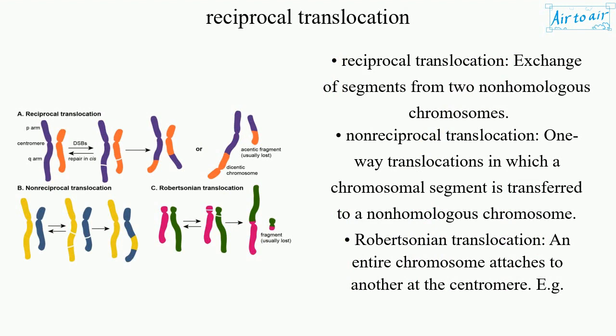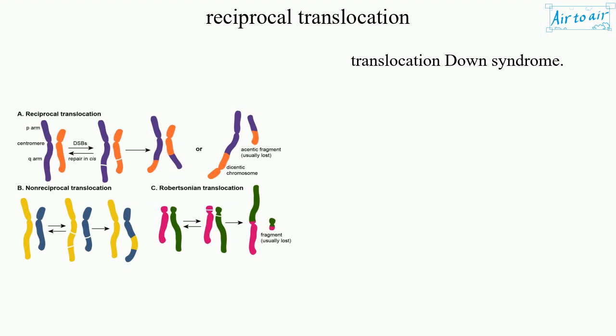Reciprocal Translocation involves exchange of segments from two non-homologous chromosomes. Non-reciprocal Translocation involves one-way transfer in which a chromosomal segment is transferred to a non-homologous chromosome. Robertsonian Translocation occurs when an entire chromosome attaches to another at the centromere, for example, translocation Down syndrome.